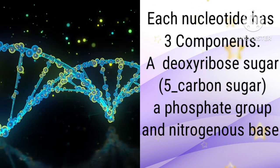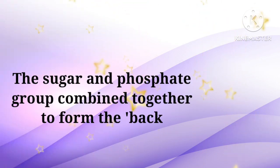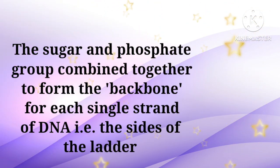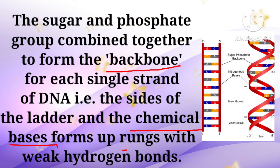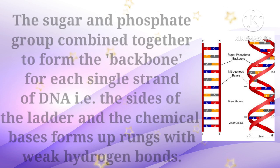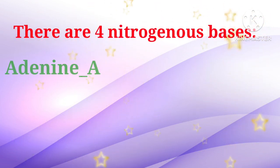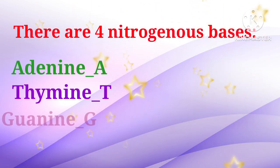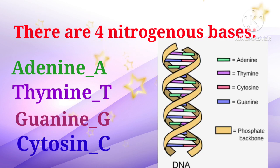Each nucleotide of the DNA contains three components: a pentose sugar, a phosphate group, and a nitrogenous base. The sugar and phosphate group forms the sides of the DNA ladder, whereas the nitrogenous bases form the rungs of the ladder.